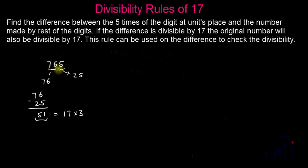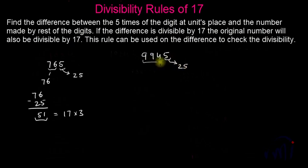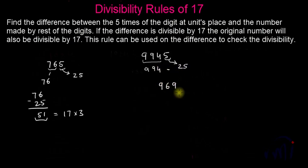Now let's take one more example — a four-digit number this time. Let us take 9,945. The digit at the units place is 5; five fives are 25, and the number made by the rest of the digits is 994. Finding the difference: 994 minus 25 gives us 969.